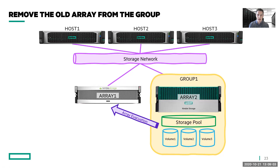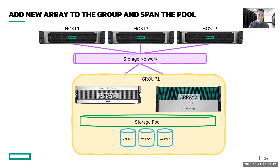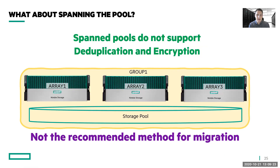An array evacuation at this point in time does require that you engage with support. Something to keep in mind: the preferred method is not to span pools. Two of the primary reasons are that spanned pools do not support deduplication or encryption. If you have encrypted volumes, spanning the pool won't work at all. Also, deduplication is not supported on systems with spanned pools. So if you are using deduplication and want to migrate from one Nimble to another, do not use a spanned pool. The best method is to simply create a group and move the volumes from one pool to another pool.